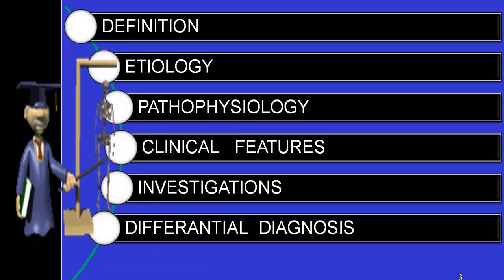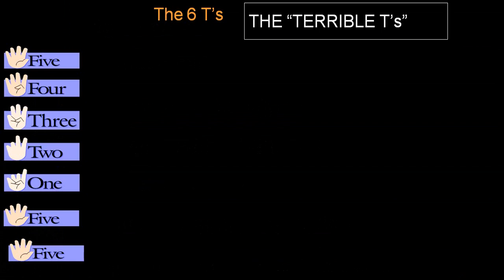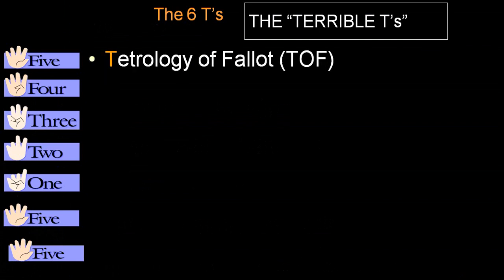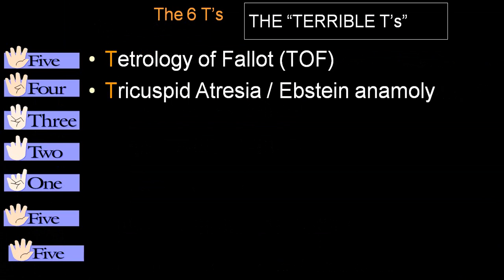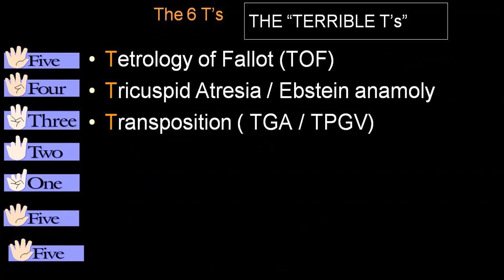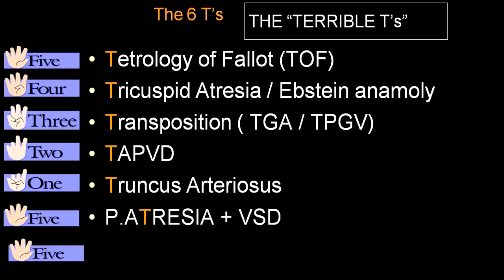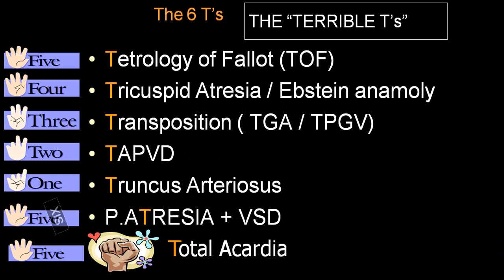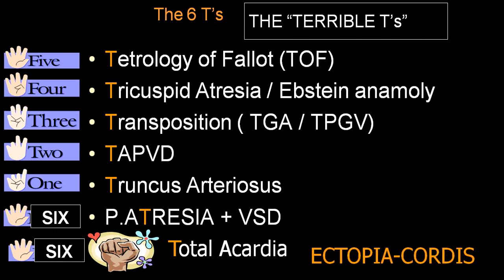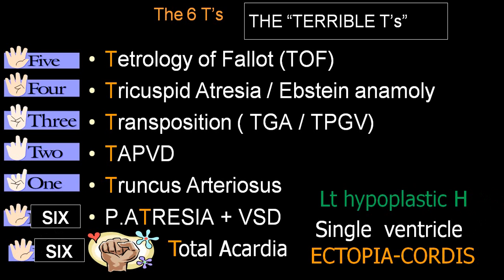Tetralogy of Fallot is a congenital cyanotic heart disease. The congenital cyanotic heart diseases include: Tetralogy of Fallot, tricuspid atresia, Ebstein's anomaly, transposition of great arteries, total anomalous pulmonary venous drainage, truncus arteriosus, pulmonary atresia with VSD, ectopia cordis, single ventricle, double outlet right ventricle, and hypoplastic left or right heart.